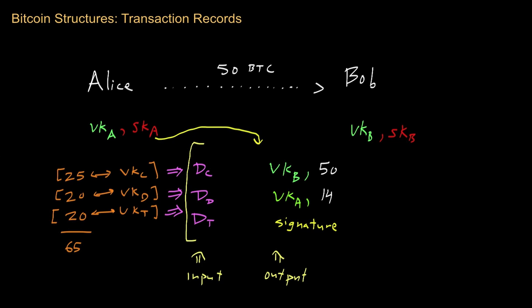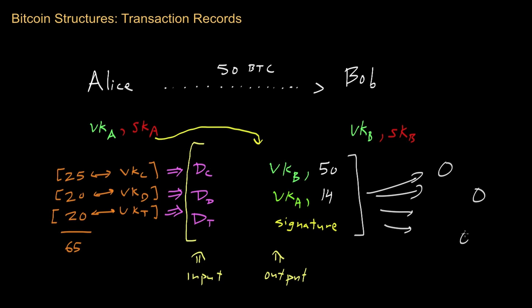All of this transaction data will then be broadcast out to all the different peers and nodes in the Bitcoin network. So everybody in the Bitcoin network will basically know that VK_A is trying to send 50 Bitcoins to VK_B.